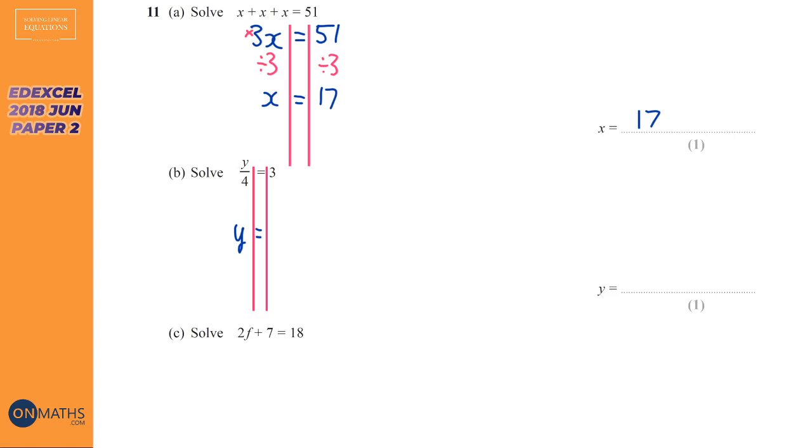So what's the opposite of divided by 4? Well, it's times 4, so we'll need to times that by 4. Now I can't just do that to the left-hand side, I've got to do it to the right-hand side as well. So we do 3 times 4, which is 12, so y equals 12.